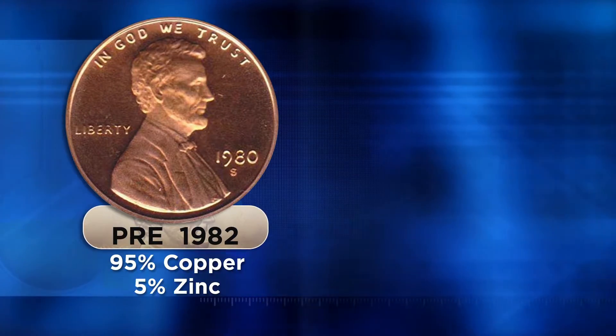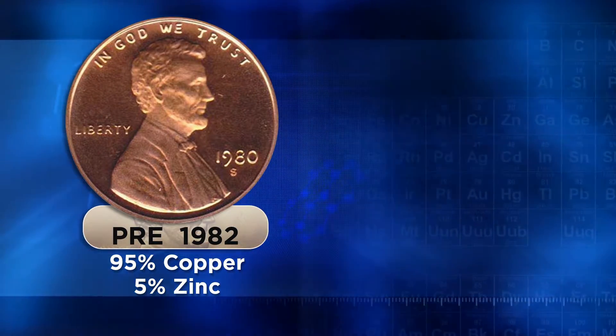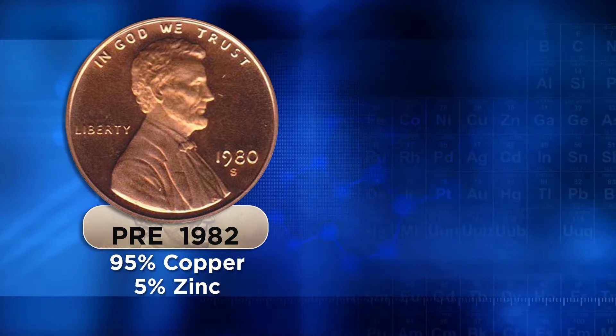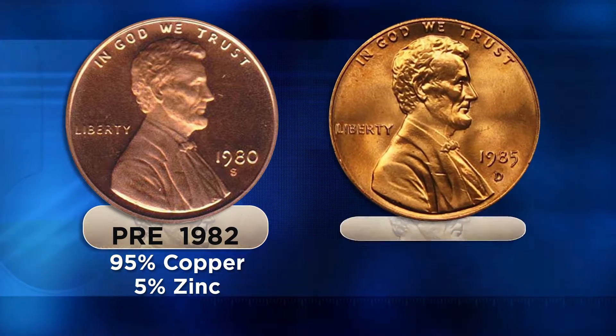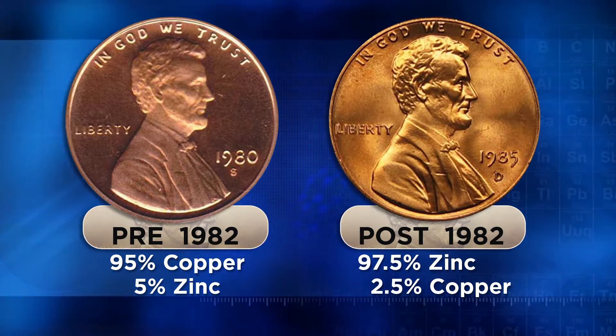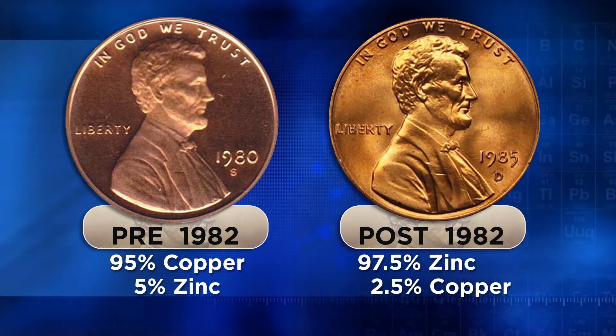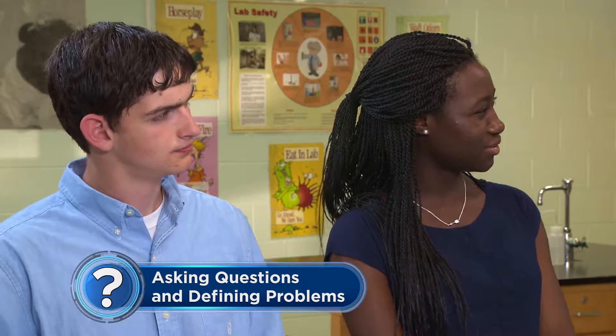My data was really similar. I determined that the pre-1982 pennies had a density of 8.6 grams per milliliter, really close to the density of copper. But the post-1982 pennies were lighter — they had the same size, but the density was 7.2, really close to zinc. Why is there such a big difference? What happened in 1982?